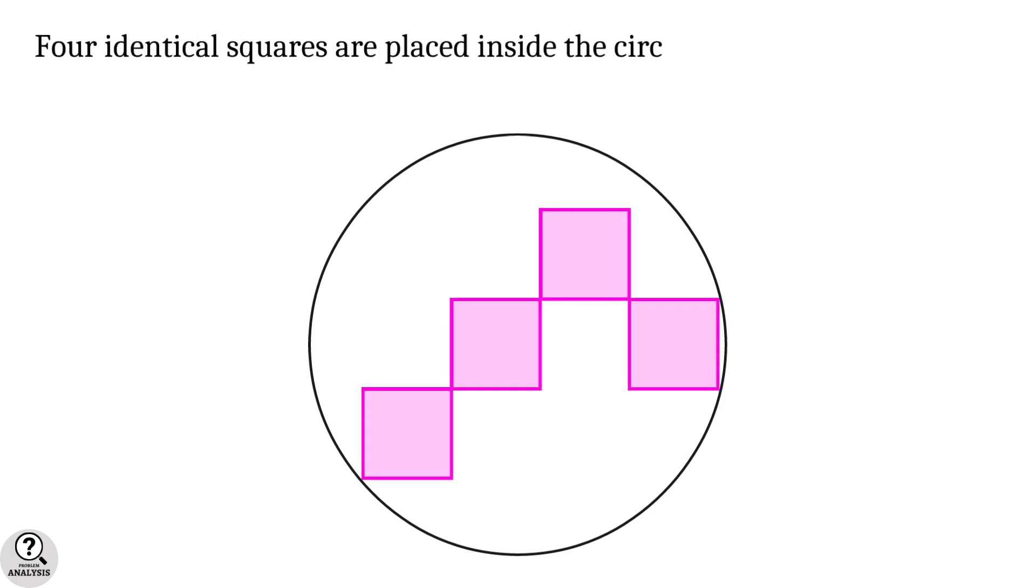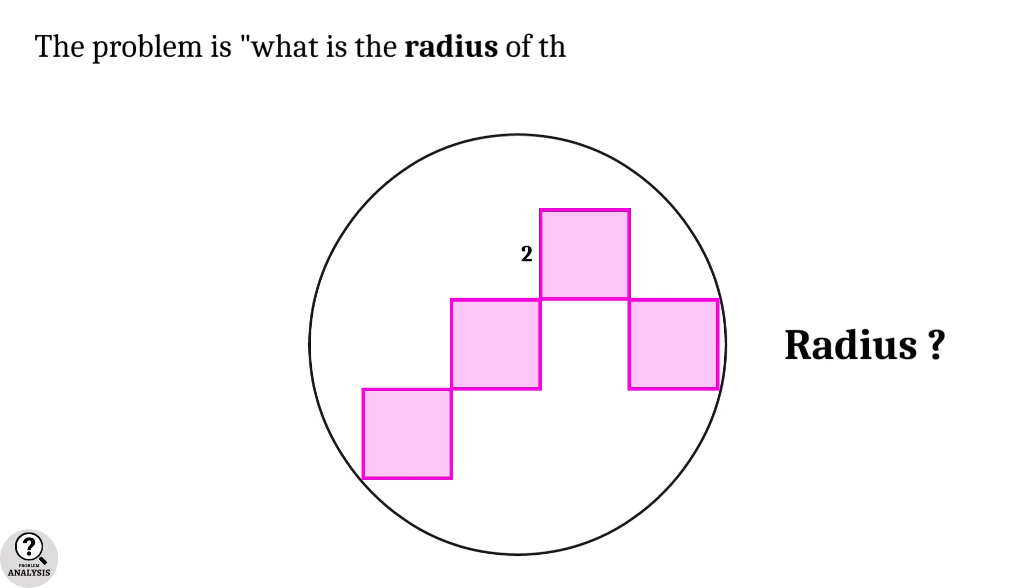Consider a circle. Four identical squares are arranged inside the circle as shown in the figure. It is given that the side length of each square is two units. Then my problem is: what is the radius of the circle?